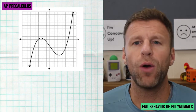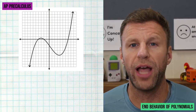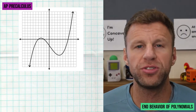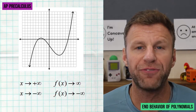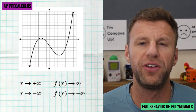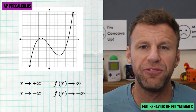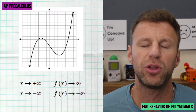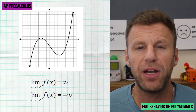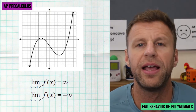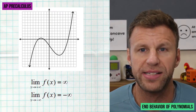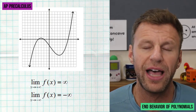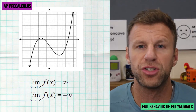Here we see a second graph where the right end is going up towards infinity and the left end is going down towards negative infinity. Old Algebra 2 notation: as x goes towards infinity, f of x is going towards positive infinity; and on the left end, as x goes towards negative infinity, the function is approaching negative infinity. Using limit notation: the limit as x approaches infinity to the right is positive infinity, and the limit as x approaches negative infinity to the left is negative infinity.